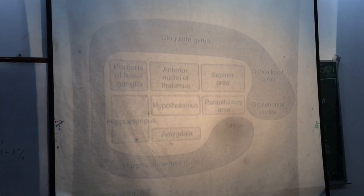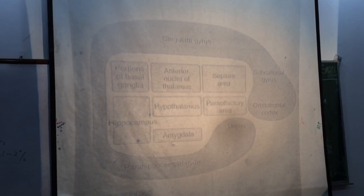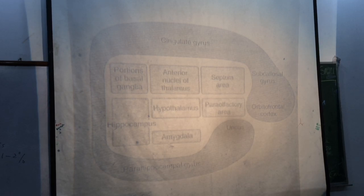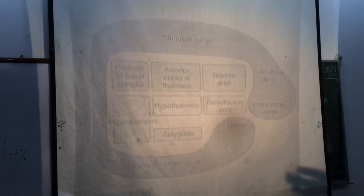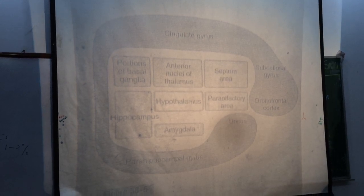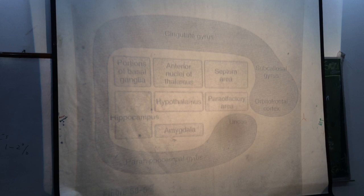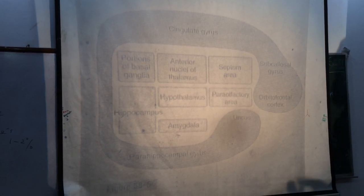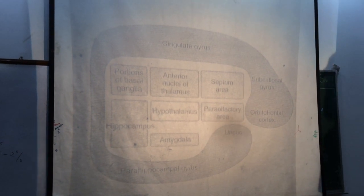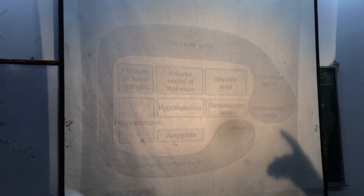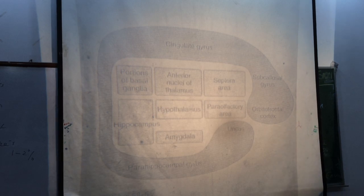The first area is the preoptic area, containing the lateral preoptic nucleus and medial preoptic nucleus. The second area is the supraoptic area, whose nuclei are the supraoptic, suprachiasmatic, anterior, and paraventricular nuclei.